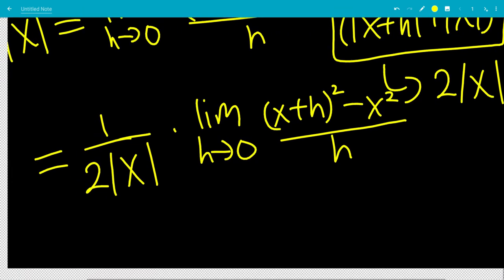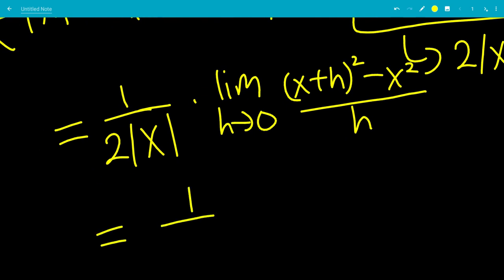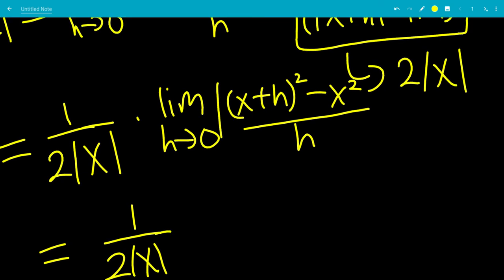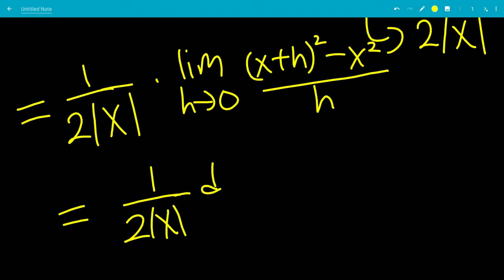Okay, now you can evaluate this, you can expand this out, subtract by x squared, do all this stuff, or we can think about this differently. So this is actually, with the limit, this is the derivative of x squared, because x plus h plugging into x squared will be x plus h quantity squared. So this is really the derivative of x squared.